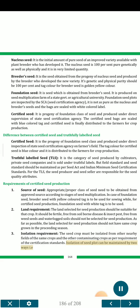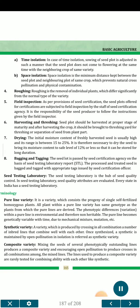3. Isolation requirement — the seed crop must be isolated from other nearby fields of the same crop and other contaminating crops as per the certification standards. Isolation of seed plot can be maintained by two ways: (a) Time isolation — sowing of the seed plot is adjusted so that the seed plot does not come to flowering at the same time as the neighbouring crop of the same variety. (b) Space isolation — the minimum distance kept between the seed plot and neighbouring plot of the same crop, which prevents natural cross-pollination and physical contamination.